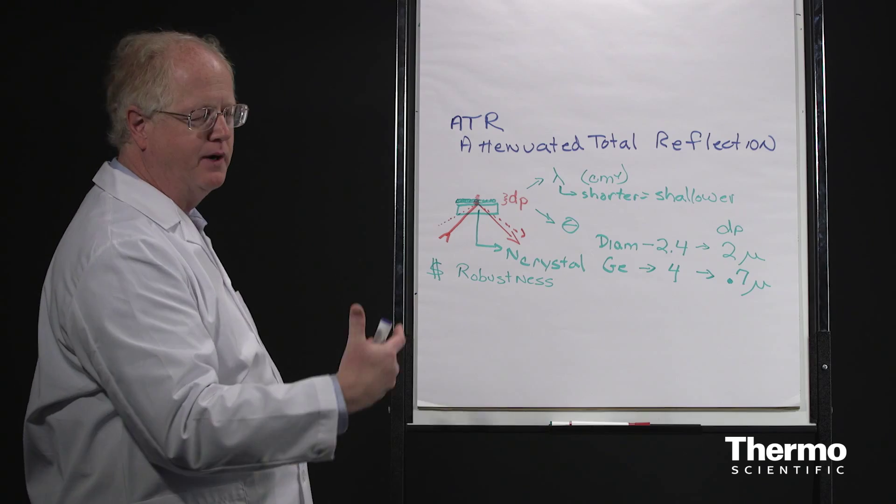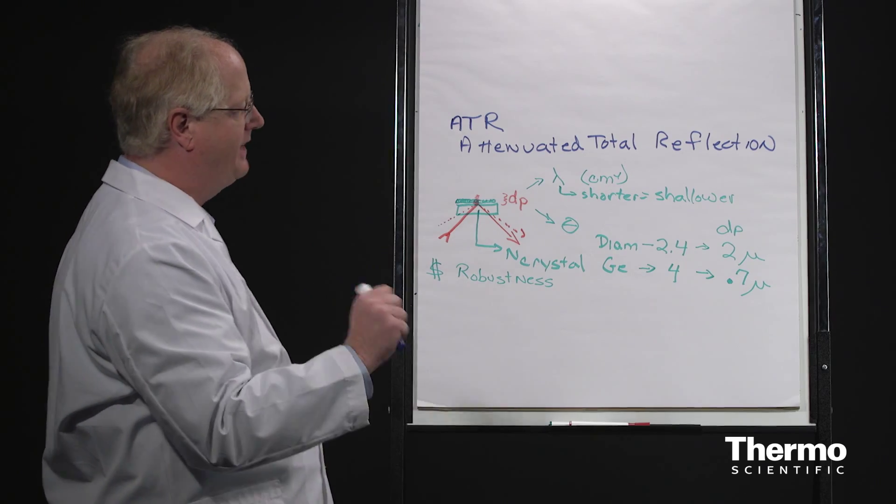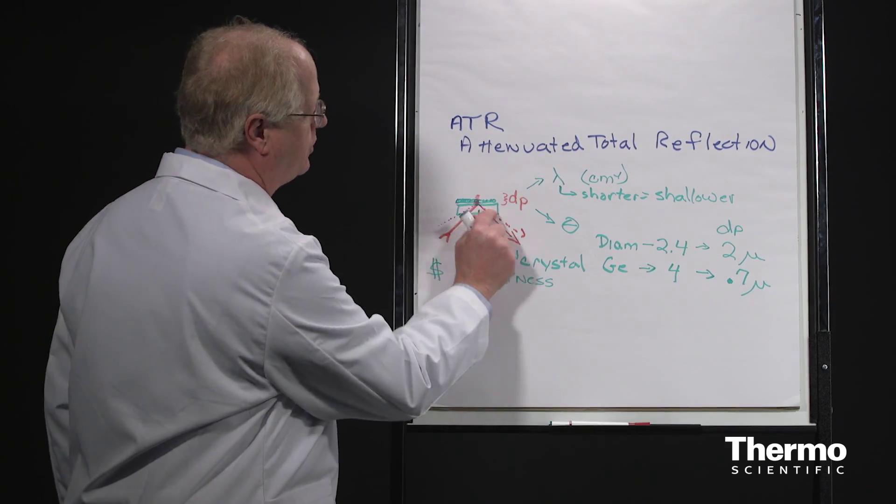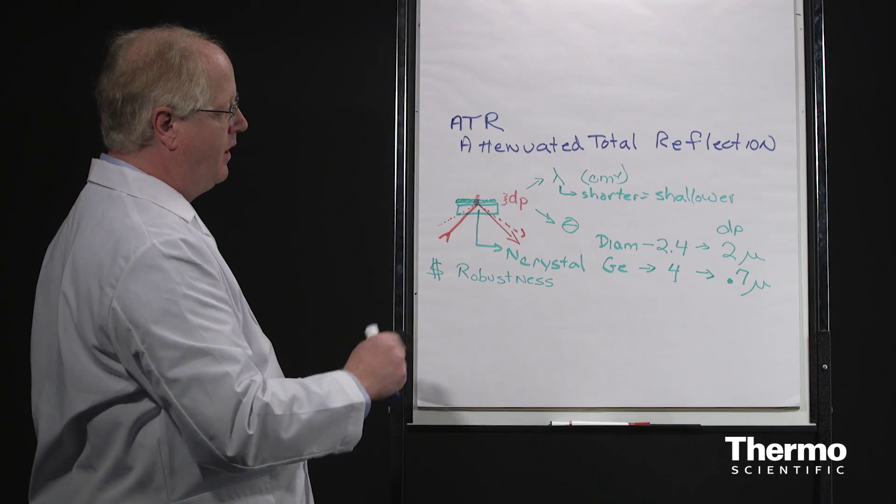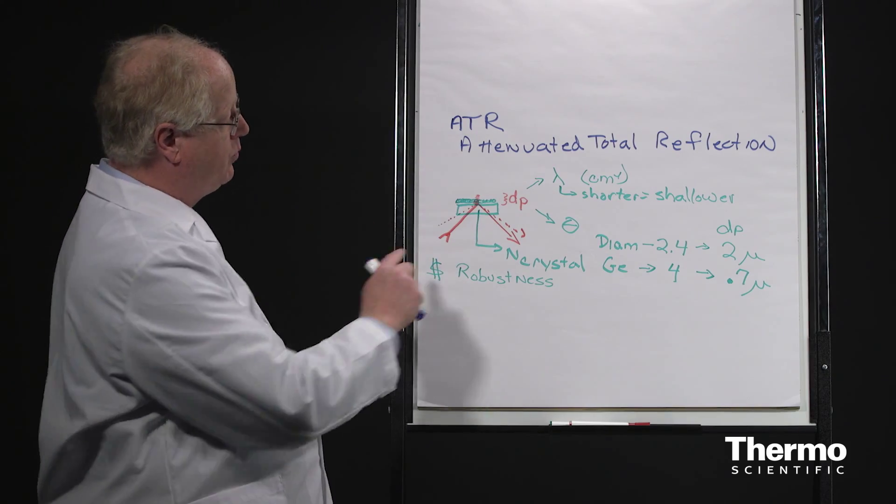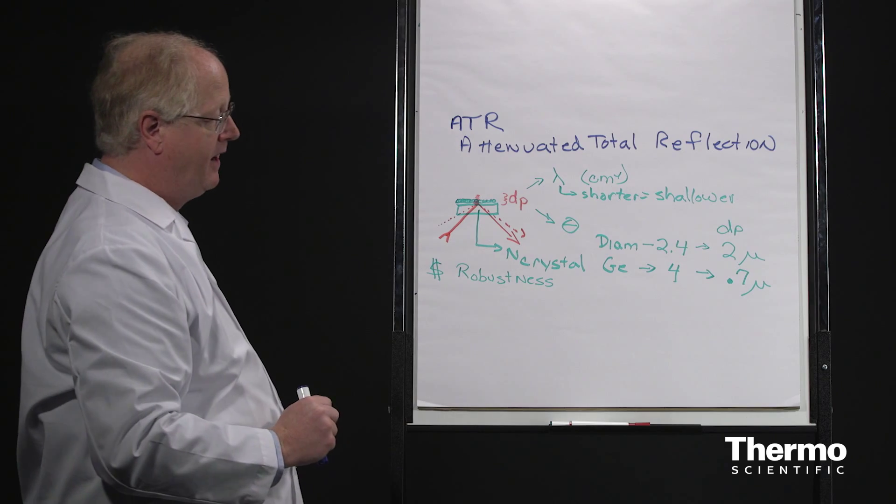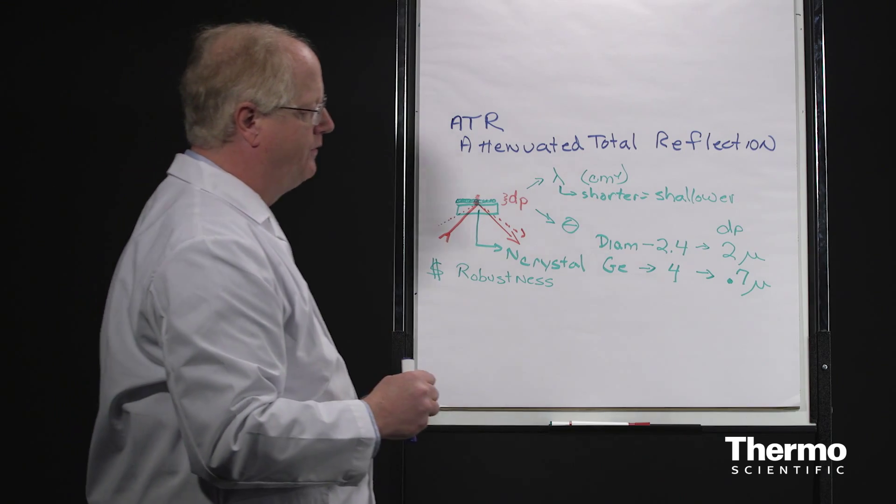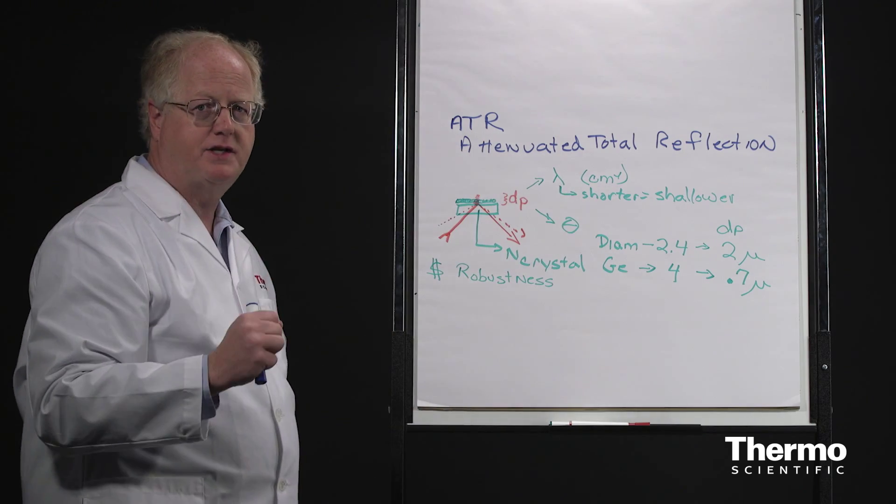Again, think back to Beer's Law, where the L, the length, the path length in Beer's Law, tells you that you're seeing more of the sample. Or if you have high concentrations, maybe you want a shallow signal. So that's a very brief overview of ATR. And now let's move into the lab and look at some of these devices and see how they work.